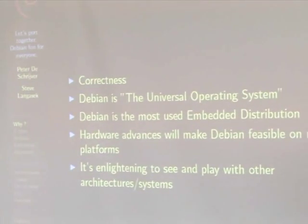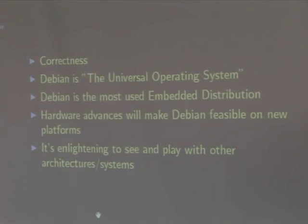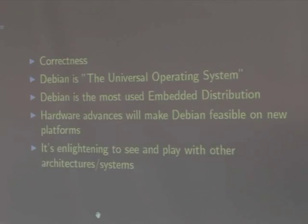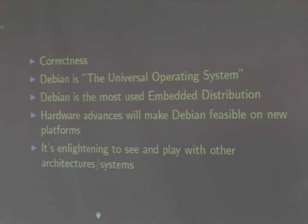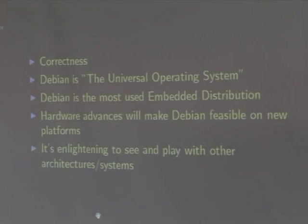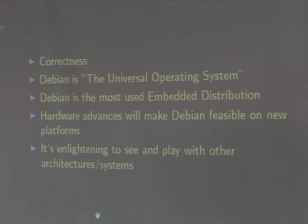The first thing would obviously be: why are we trying to write portable code? There are various reasons. First is correctness — C language and other language standard definitions exist, and programs are supposed to adhere to them as closely as possible. Porting to different architectures is a good way of exercising and verifying this. Debian calls itself the universal operating system, and you obviously can't make that claim if you run only on one architecture.